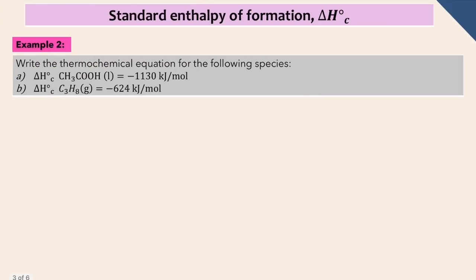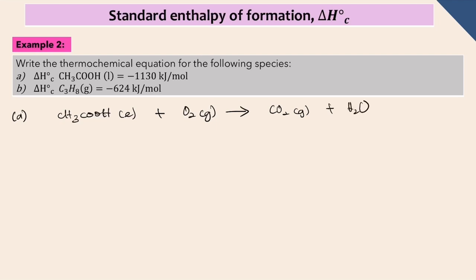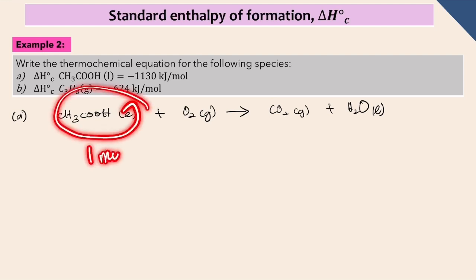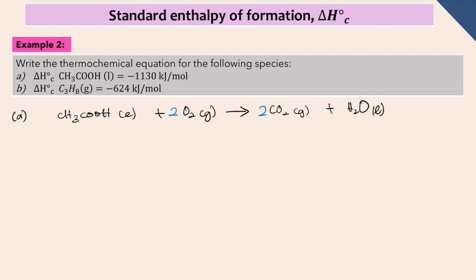Let's look at some examples. You were asked to write the thermochemical equation for the following species. For delta H_c^0 (combustion), make sure the reactant is 1 mole, burned in excess oxygen to produce carbon dioxide and water. Balance the equation as long as the target reactant is always 1 mole. After balancing, don't forget to write delta H on the right side of the thermochemical equation.